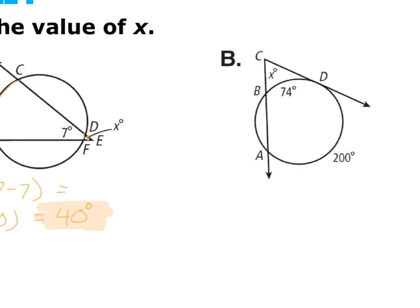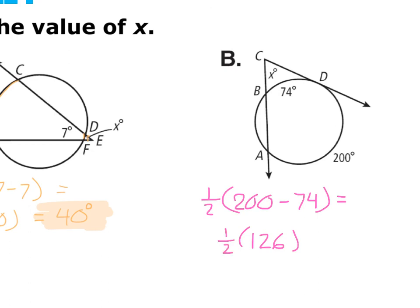In our last example, we have a tangent and a secant line. We subtract the two intercepted arcs: 200 minus 74, times one half. 200 minus 74 is 126, and 126 times one half is 63. So X is equal to 63 degrees.